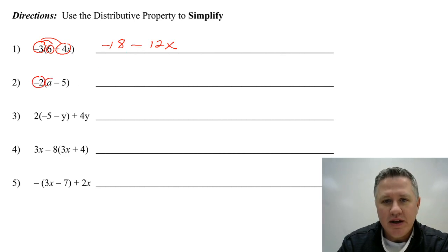All right, we are going to distribute the negative two to both terms. And remember, don't look at the signs. Two times A is 2A. Two times five is 10. And the opposite of a positive is a negative. And the opposite of a negative is a positive.